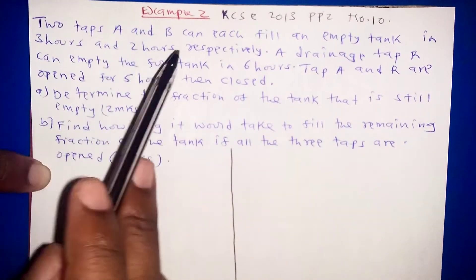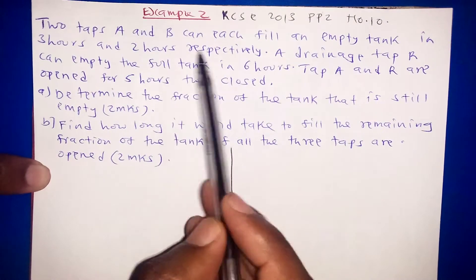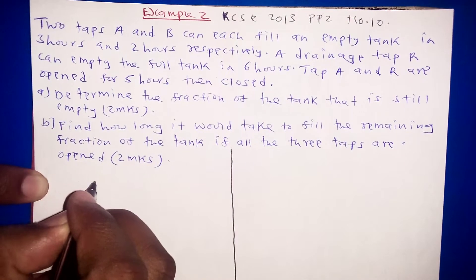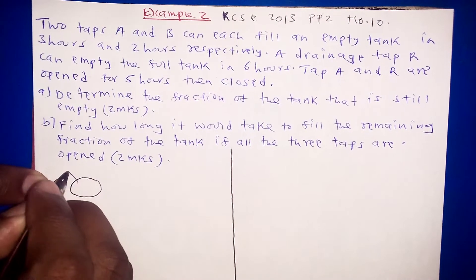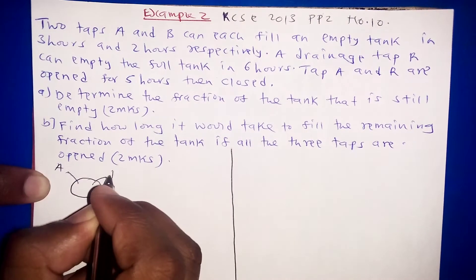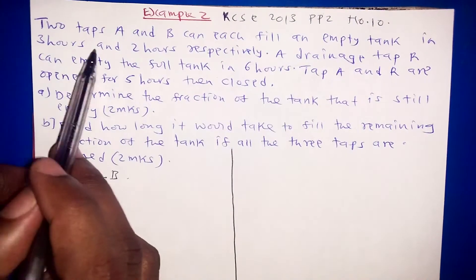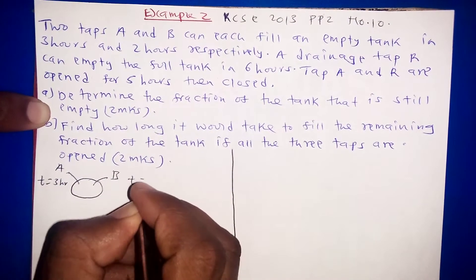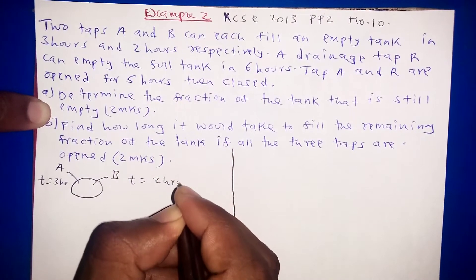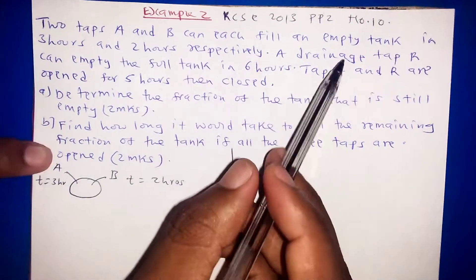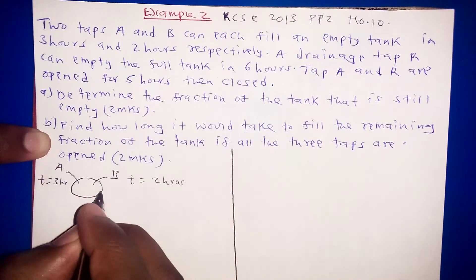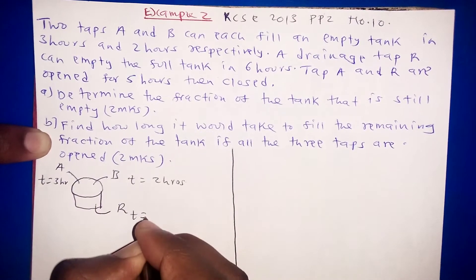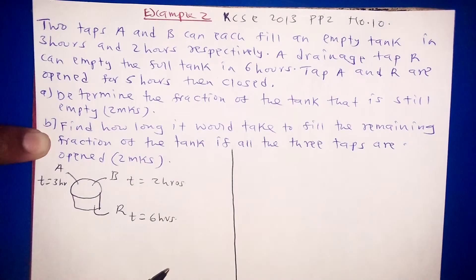The question reads that two taps A and B can each fill an empty tank in three hours and two hours respectively. So we have tap A and tap B: tap A takes three hours while tap B takes two hours to fill an empty tank. Then we have a drainage tap R which can empty the full tank in six hours, emptying within a time of six hours.